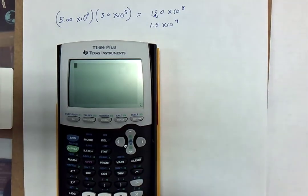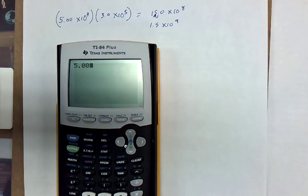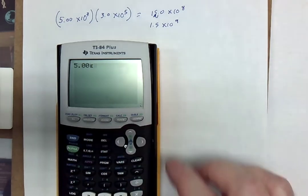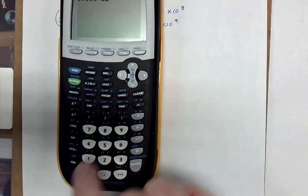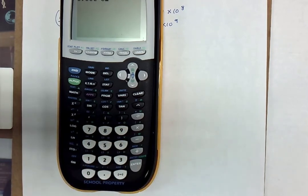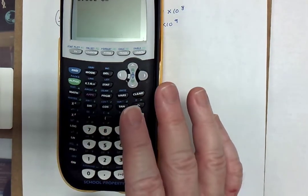In the event that one of those was a negative exponent, 5.00, 2nd EE, and then down here at the very bottom, you use the negative sign and say make it negative fifth. That's how you put it in when you're using a graphing calculator.